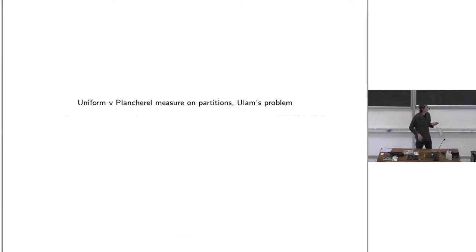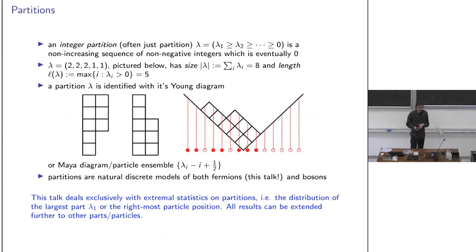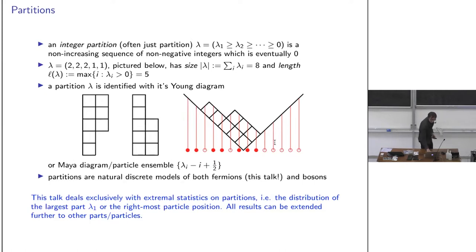The talk will mostly be about partitions. Partitions are simply finite lists of non-increasing integers — for example, two two two one one. Written in so-called Russian notation, you can trace the profile: each up-step corresponds to a hole and each down-step corresponds to a particle.